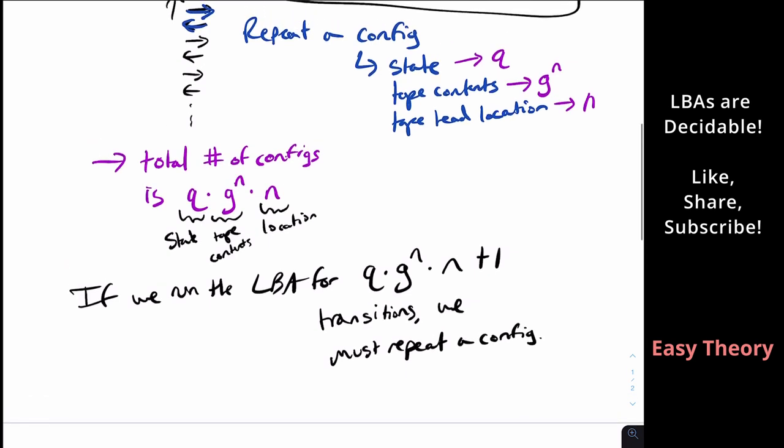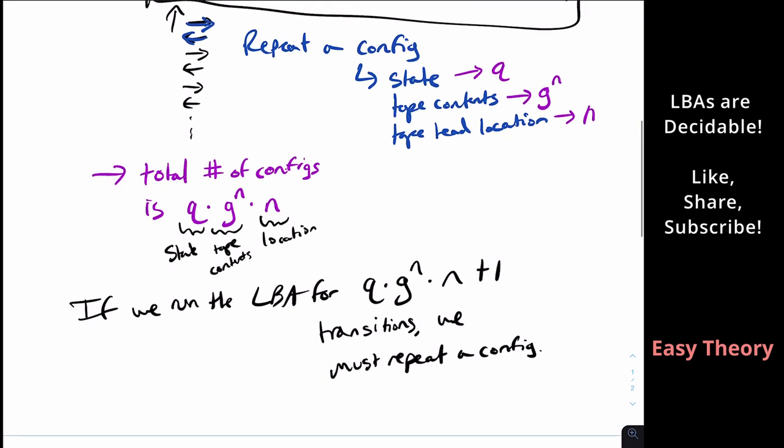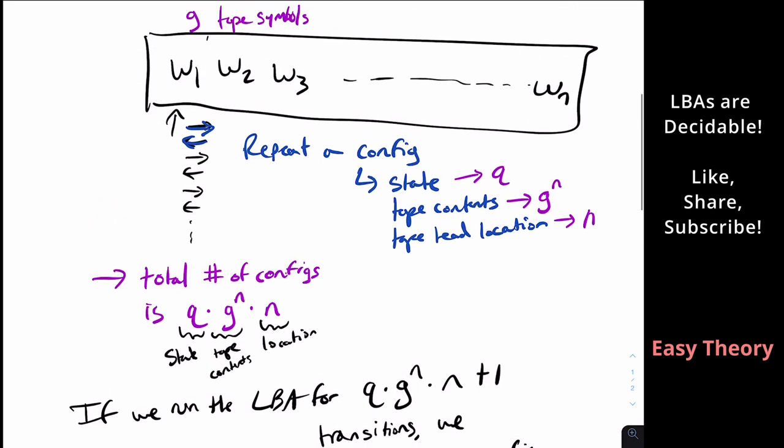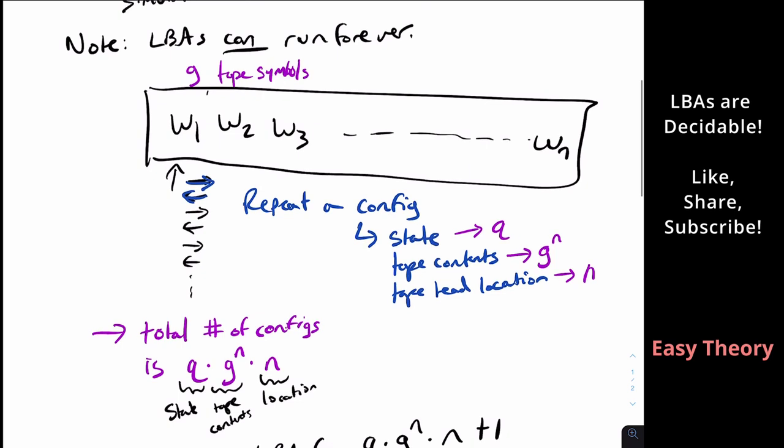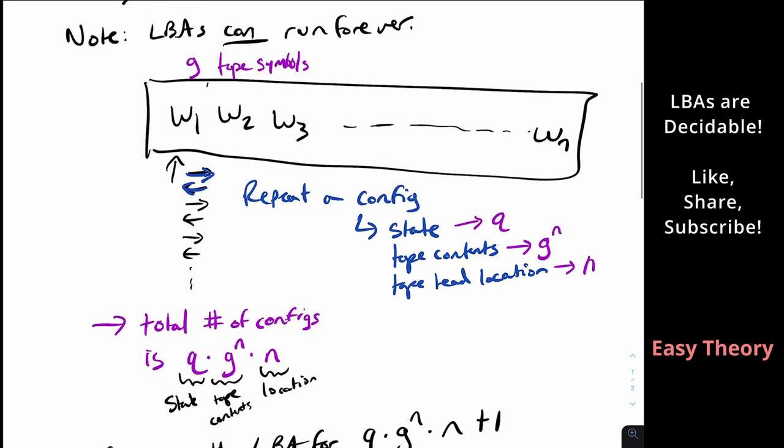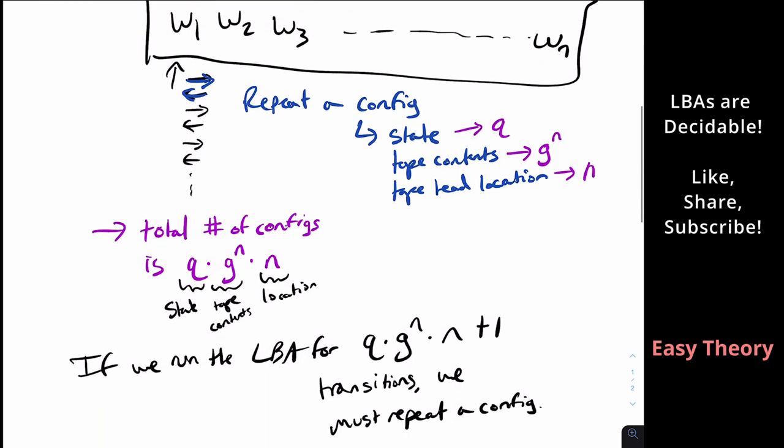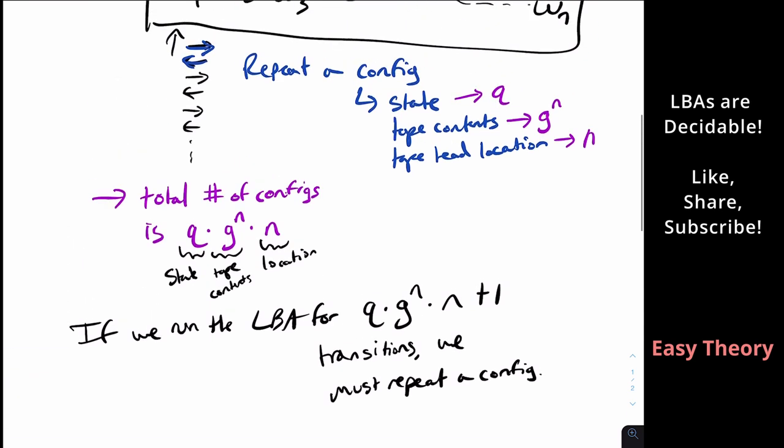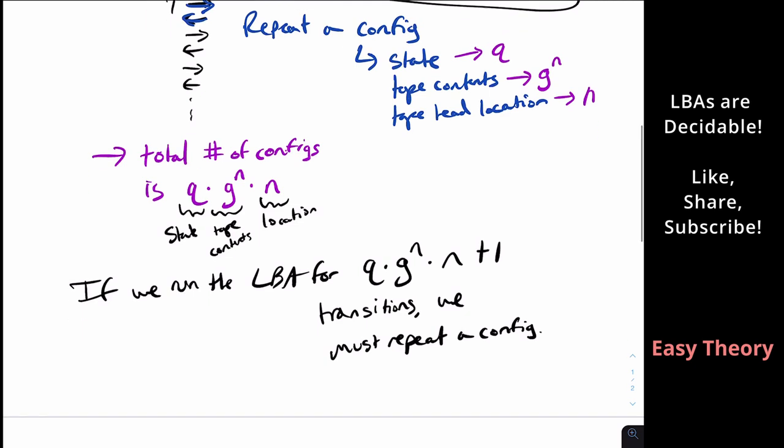And that's purely from the pigeonhole principle. If there are 100 possible configs and we run for 101 transitions, we must see a configuration twice. And because an LBA is deterministic, just like a Turing machine, we will run forever, because if we see the same configuration we were in, we're just going to do the same transitions every single time, and we can't allocate additional space, so we will run forever.